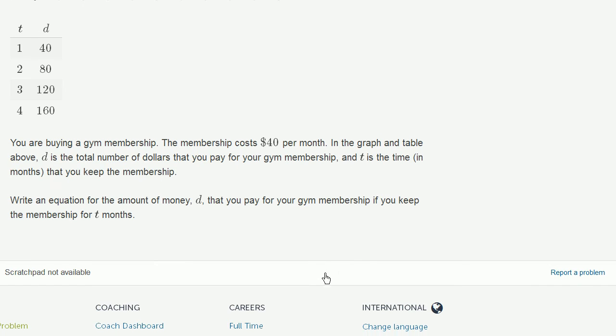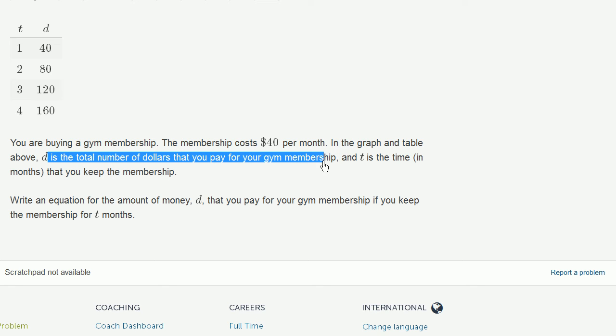They explain: you are buying a gym membership. The membership costs $40 per month. In the graph and table above, d is the total number of dollars that you pay for your gym membership. And t is the time in months that you keep the membership.